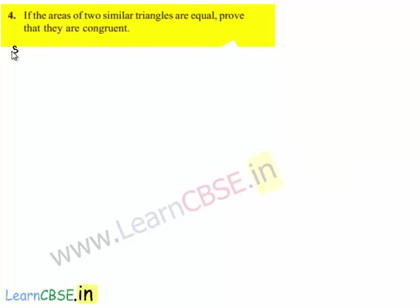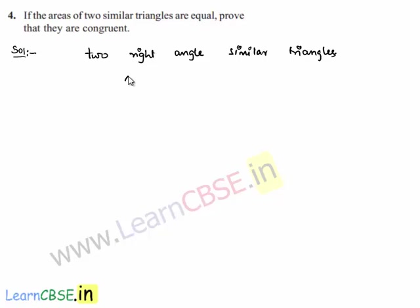Now moving on to the solution. For simplicity, let us consider two right-angle similar triangles, triangle ABC and triangle DEF, which are similar.